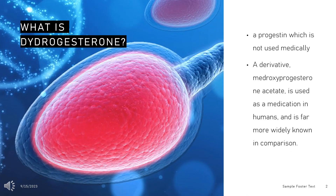What is medroxyprogesterone? Medroxyprogesterone is a progestin which is not used medically. A derivative, medroxyprogesterone acetate, is used as a medication in humans and is far more widely known in comparison.